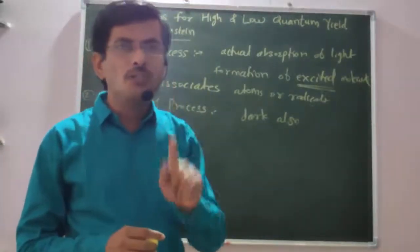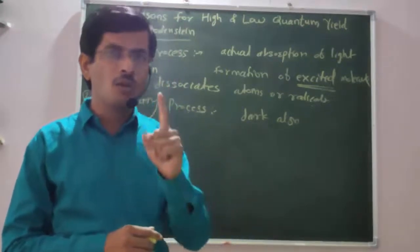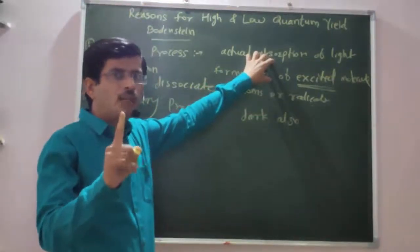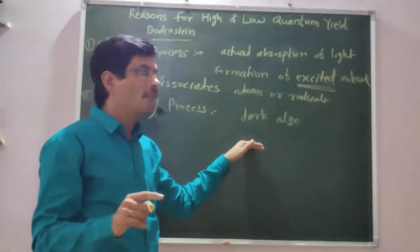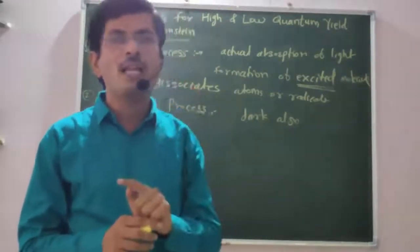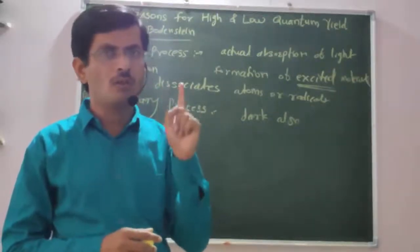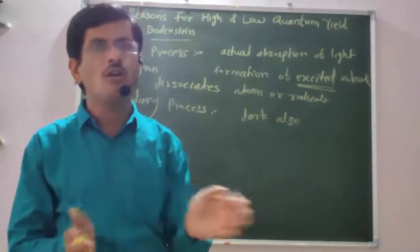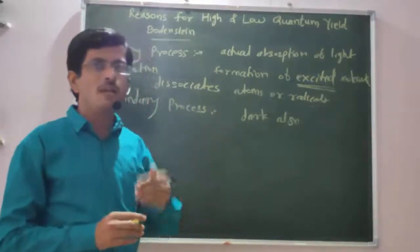Due to the secondary process occurring in the dark, there is the possibility that more number of molecules react by absorbing only one quantum of light radiation. Therefore, quantum yield is not equal to unity or close to unity — quantum yield may be high or low.